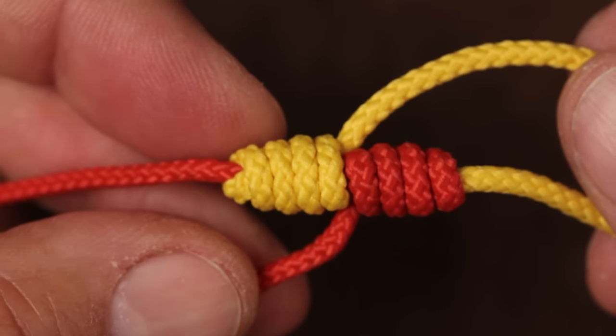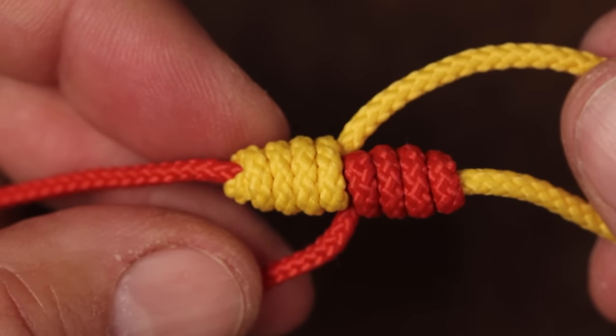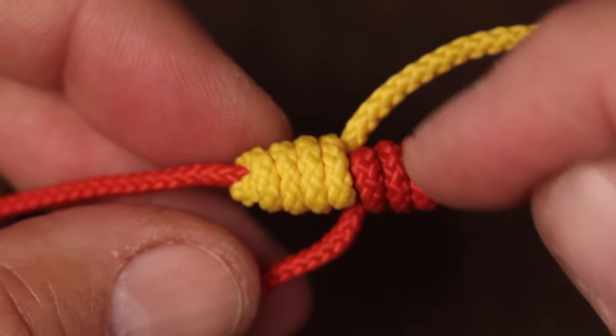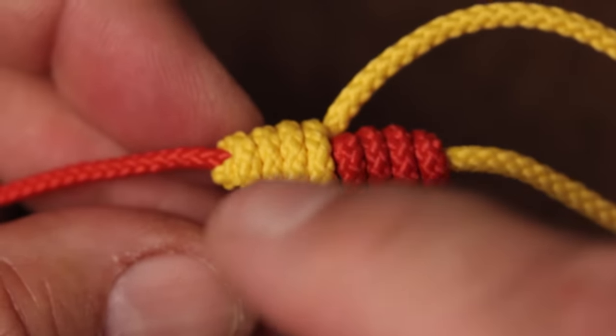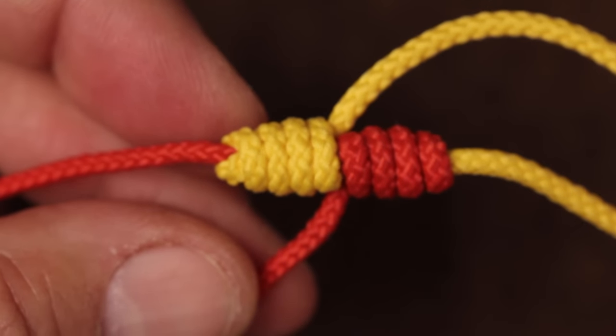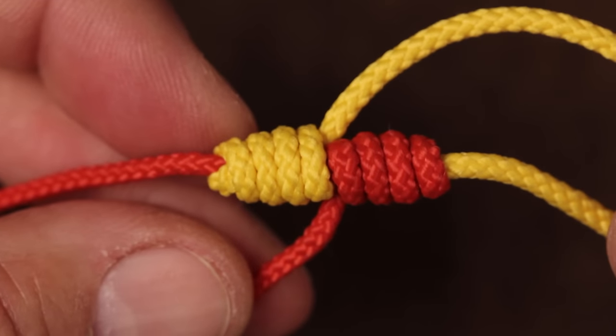When correctly tied, the wraps on both sides of the knot should be fairly even and running in the same diagonal direction. The tag ends should protrude in a gentle S shape. Up close, it really is a very pretty knot, if there is such a thing.